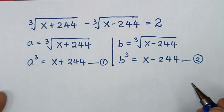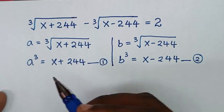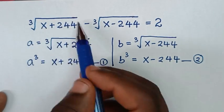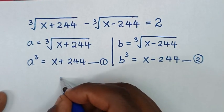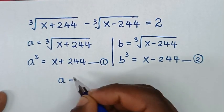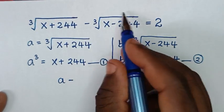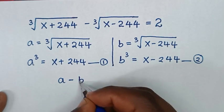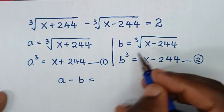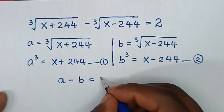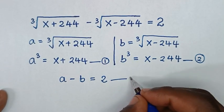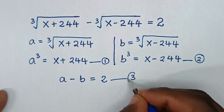Then in the next step, because we let this as a and this as b, it will be a minus b is equal to 2. We'll call this equation 3.